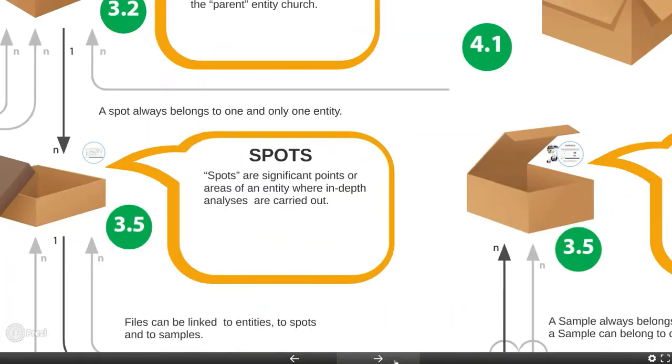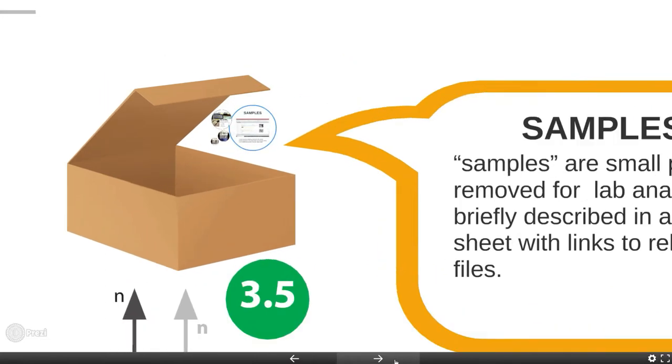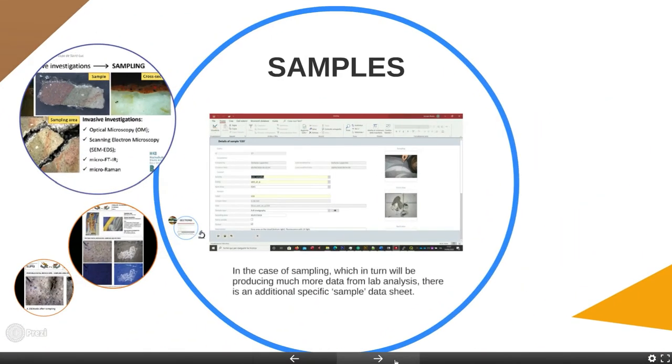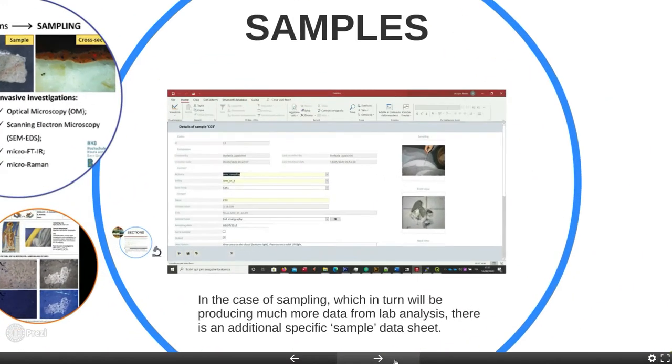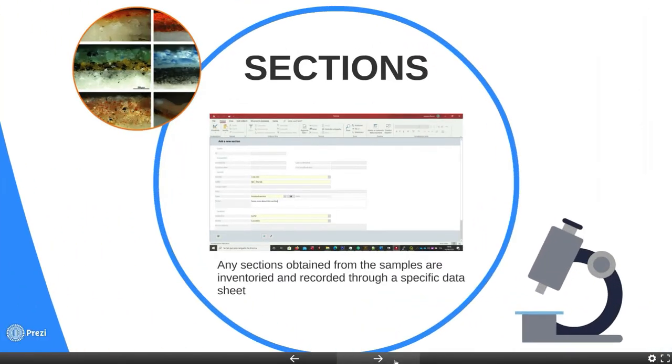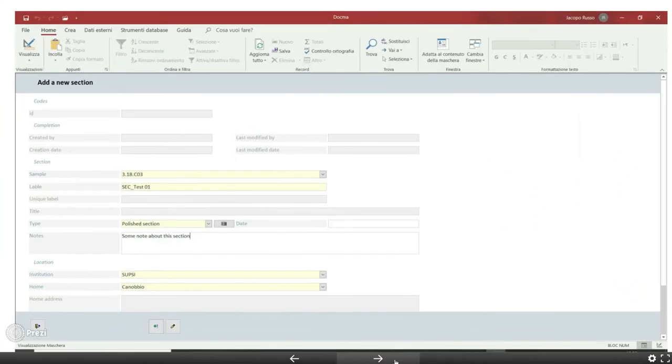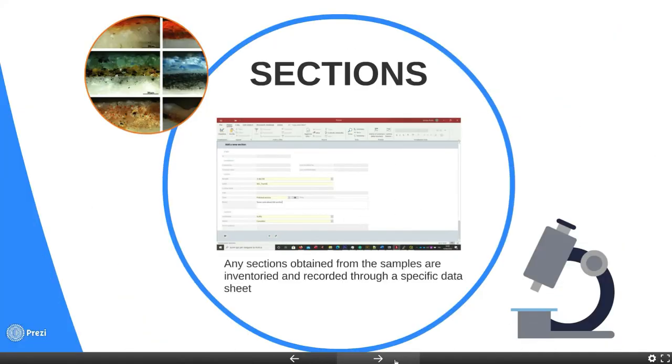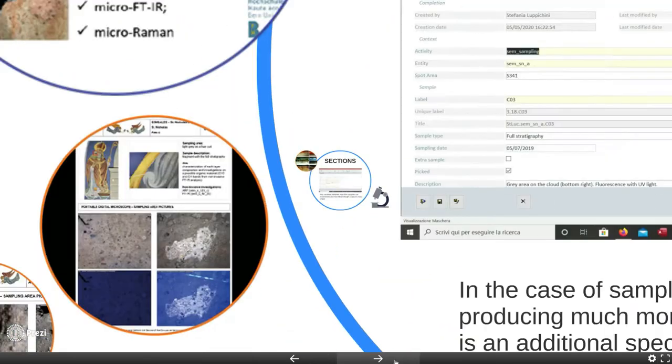In the case of sampling, which in turn will be producing much more data from lab analysis, there is an additional specific sample data sheet. Sections obtained from samples have a data sheet as well, with the archival location, the archive and the place, to make them accessible in the future to other researchers.